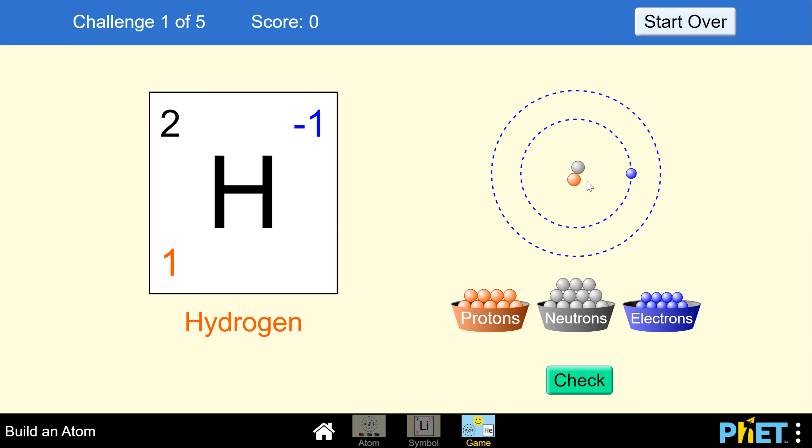So now we're at zero because the proton and electron cancel each other out. Let's go ahead and add another electron—now we should be at negative one because we've got two electrons and one proton. We'll click this check button, and we get this big smiley face that tells us we're right. You can go ahead and go on to the next problem.